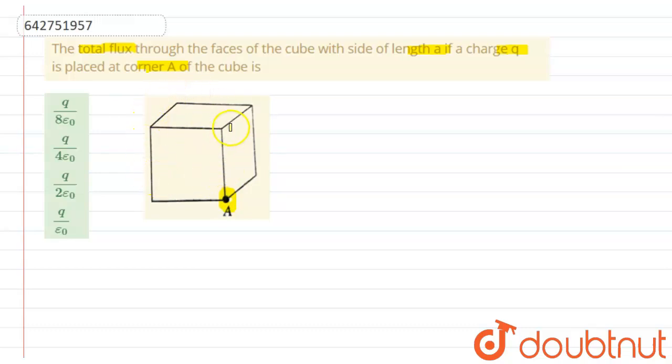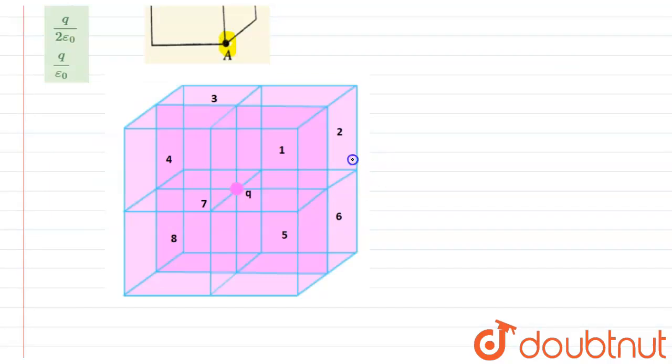To find the total flux linked with the surface, consider eight similar cubes such that the charge is placed at the center. For this Gaussian surface, the flux φ equals q divided by ε₀.